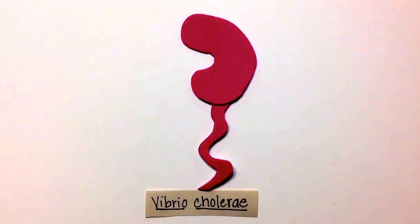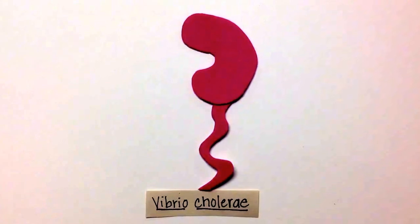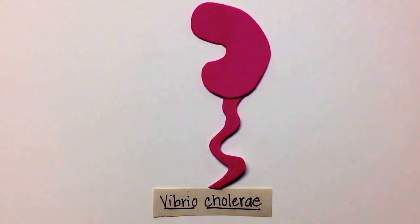Vibrio cholera is a gram-negative, curved, comma-shaped rod bacteria with a single flagellum that causes high motility and serves as a virulence factor.